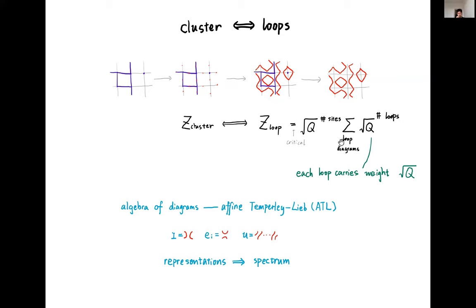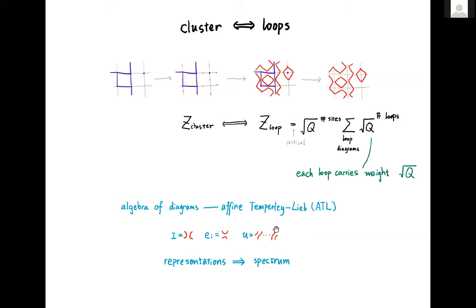The reason we're interested in the loop representation is that on the lattice there is an algebra of loop diagrams called the Temperley-Lieb algebra, generated by elements with their algebraic relations. The key point is that representations of this algebra will give us the spectrum and the correlation functions we're interested in.